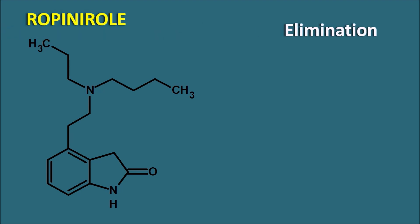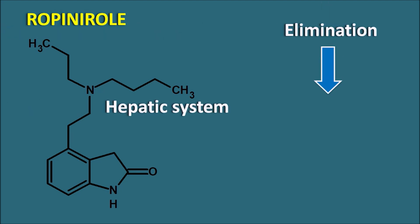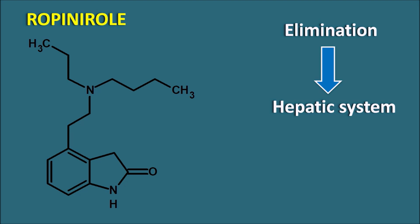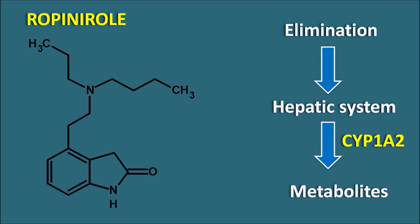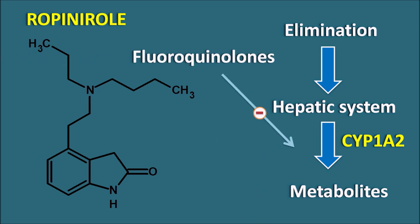Another drug is ropinirole. Ropinirole undergoes elimination mainly through the hepatic system via extensive hepatic metabolism. It is metabolized by the enzyme CYP1A2 and converted to metabolites. Any drugs acting as inhibitors of the cytochrome P450 system — for example, fluoroquinolones, which are strong inhibitors of CYP1A2 — can inhibit the metabolism of ropinirole. That's why ropinirole can show drug interactions with enzyme inhibitors, and whenever enzyme inhibitors are given along with ropinirole, the dose of ropinirole should be reduced.